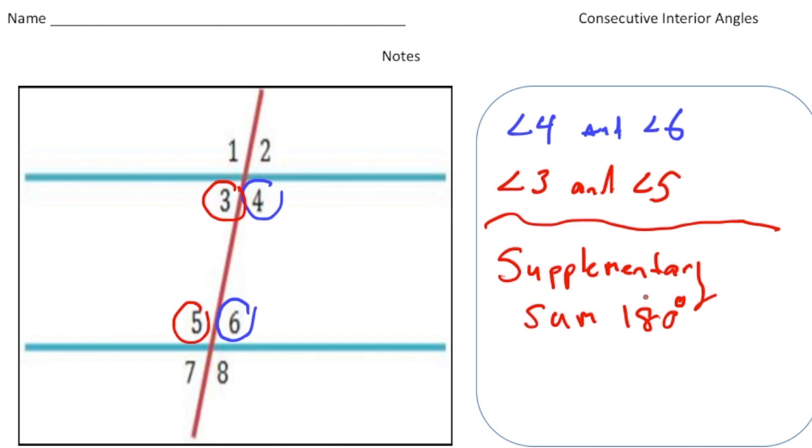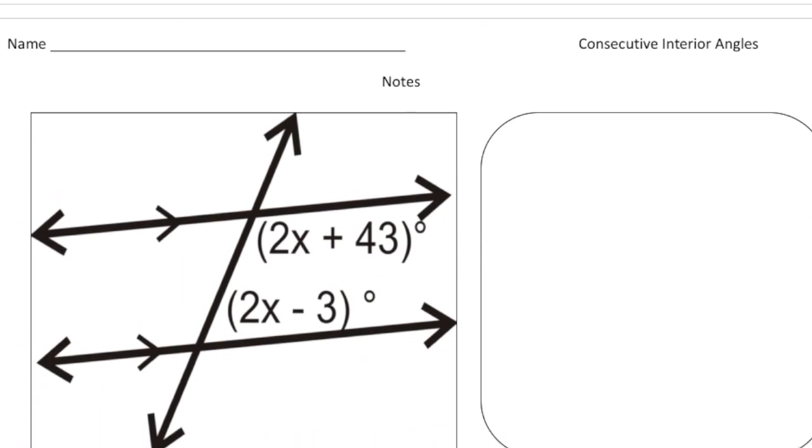So consecutive interior angles - again, the key thing is that the two lines are parallel and cut by a transversal. Their sum will always be 180 degrees. So if you turn to the next page, here's a problem.